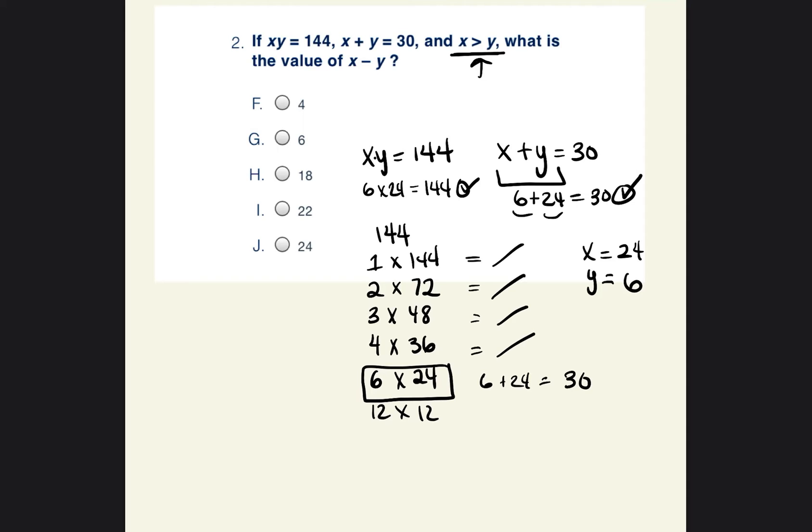Okay, so we also took care of that. So now we have to go ahead and subtract x minus y. So x minus y, x is 24, 24 minus 6. And if you guessed 18, then that's the proper answer.